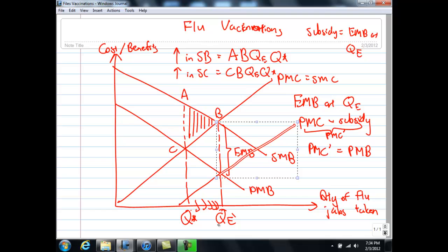So now, we are actually consuming the flu jabs, the quantity of flu jabs at QE because of the invisible hand. So you can see that by having a subsidy here, we are now led by the invisible hand. We are still trying to maximize our self-interest, but this time we are consuming exactly the same output that also maximizes society's interest. Thank you.